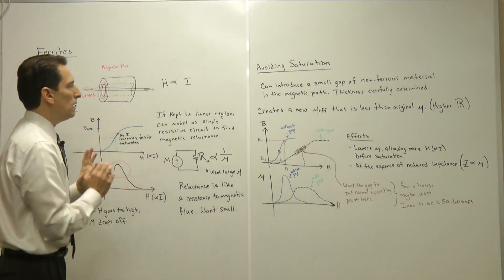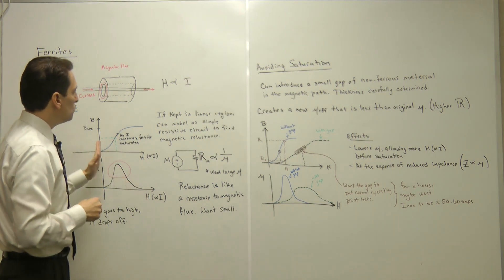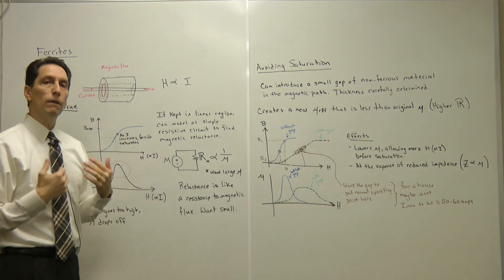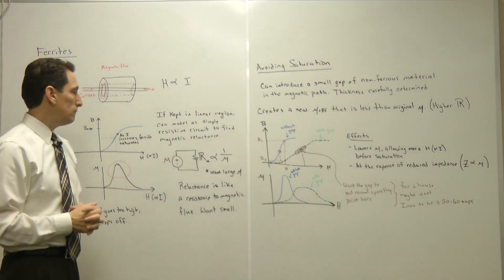So this is the idea of saturation. If you push too much current through the ferrite, you're going to end up in a region where you have very little permeability, and that means you have very little performance of the ferrite.